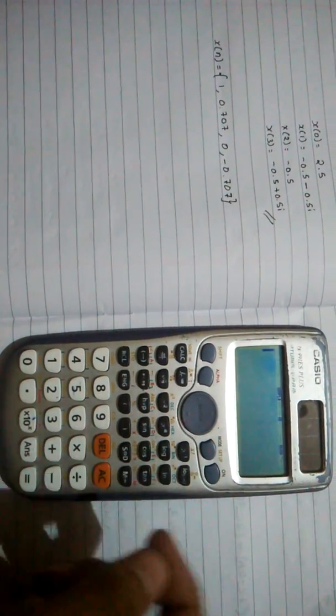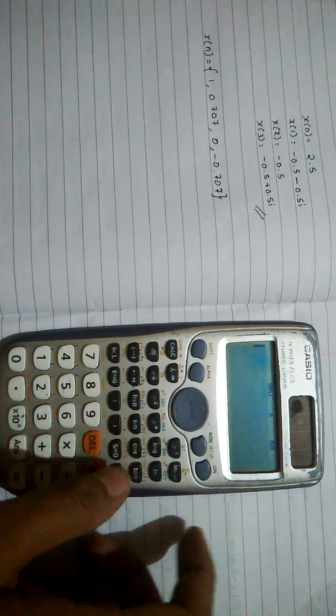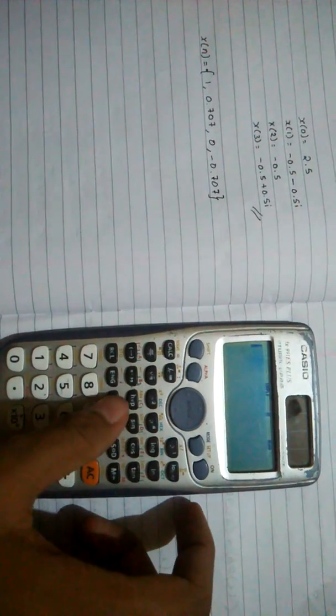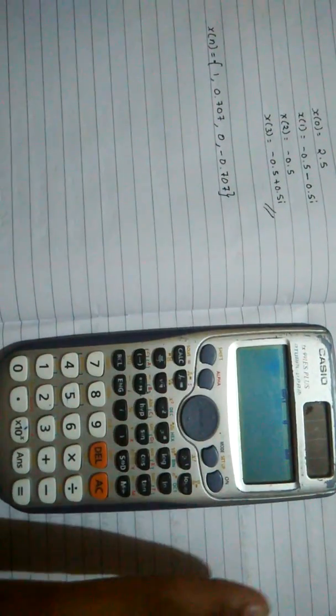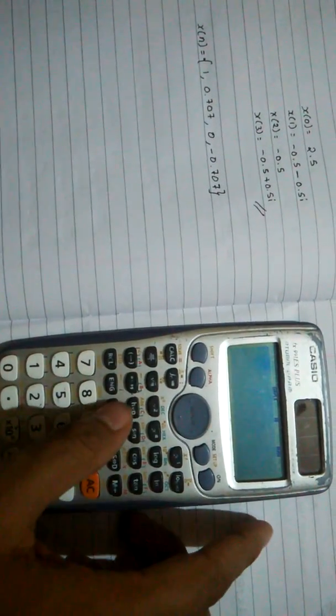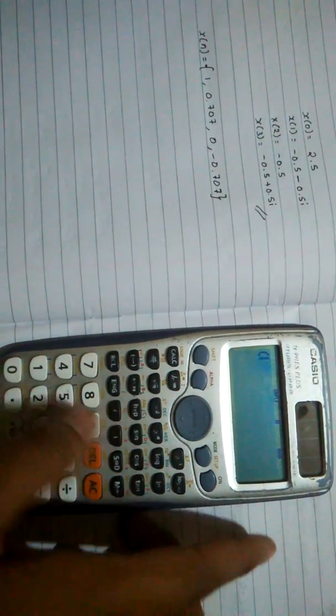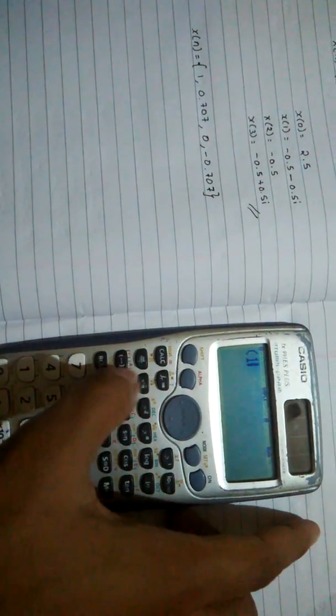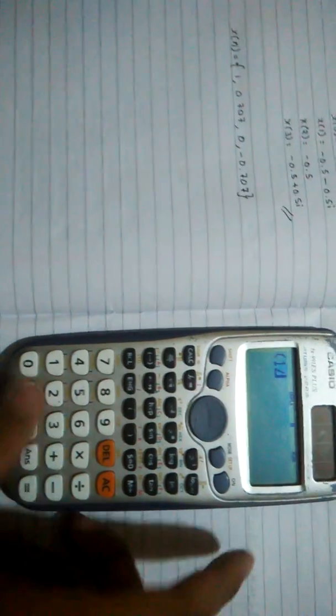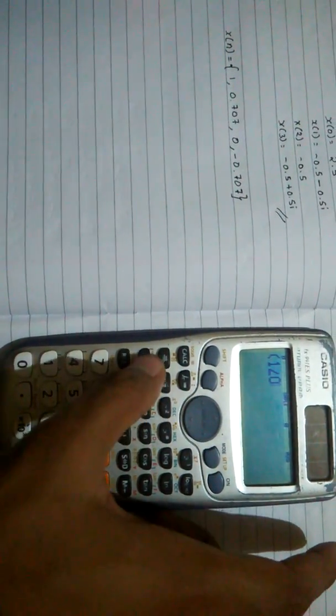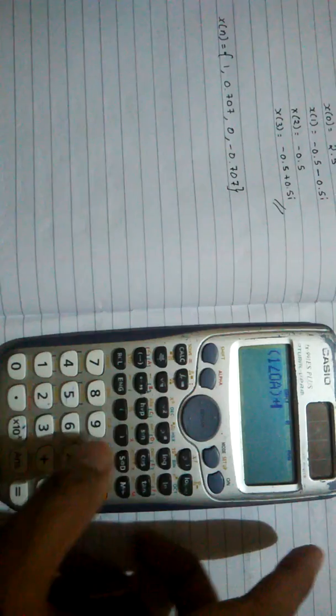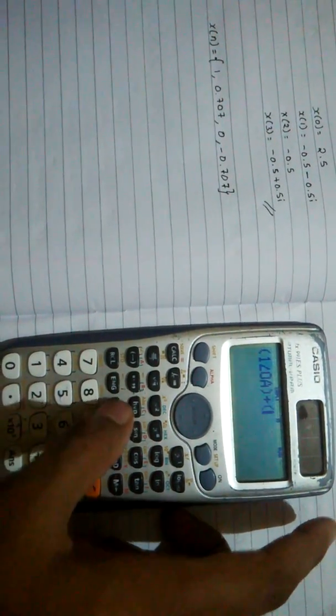First, make sure the calculator is in complex mode, and then enter open bracket 1 shift angle 0 alpha a, and then close bracket. Plus open bracket.